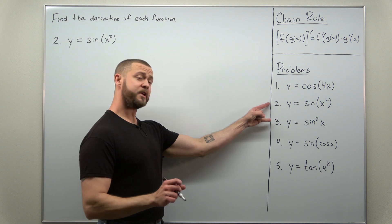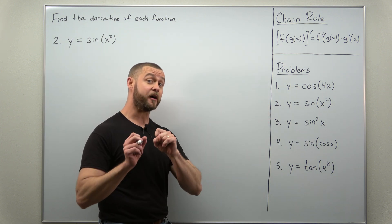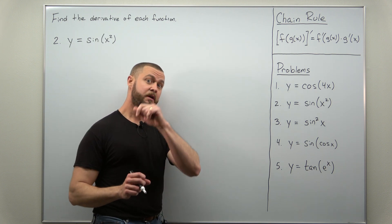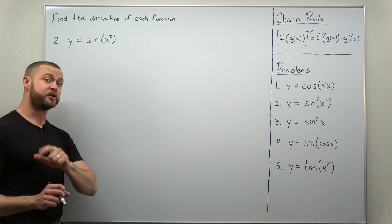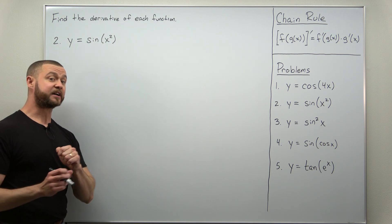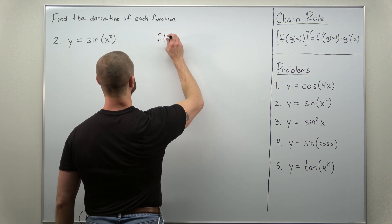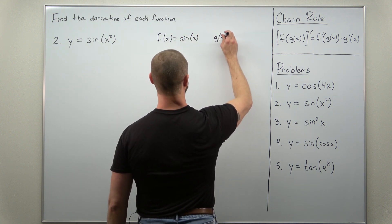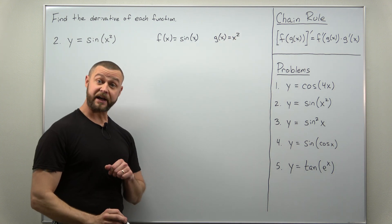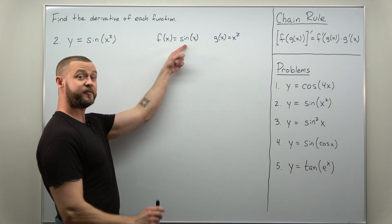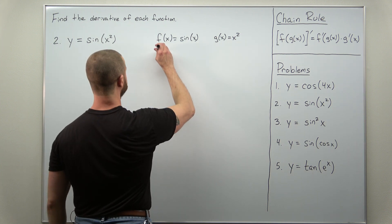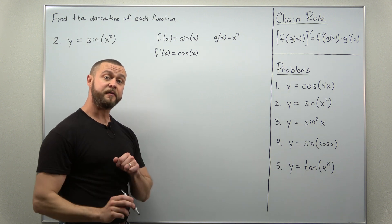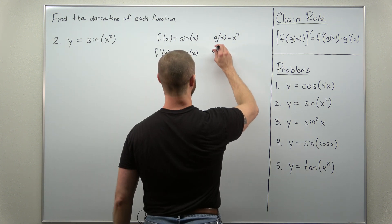Problems 2 and 3 are very similar — they involve the same outer and inner functions, but in different combinations, and that makes a huge difference in the derivative. Here we identify our outer function as sine of x and the inner function as x squared. So f of x, our outer function, is sine of x, and g of x is x squared. The derivative of sine of x is cosine of x, and the derivative of x squared, applying the power rule, comes out to 2x.